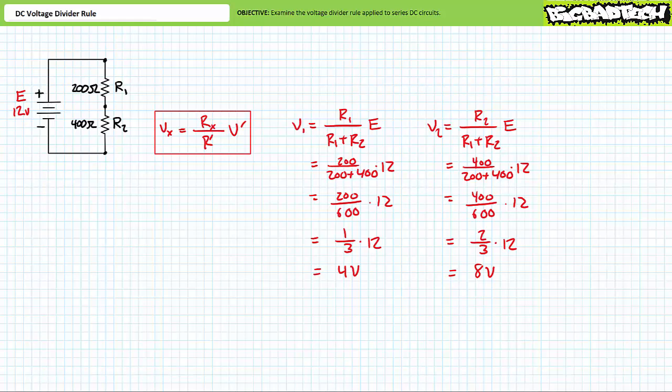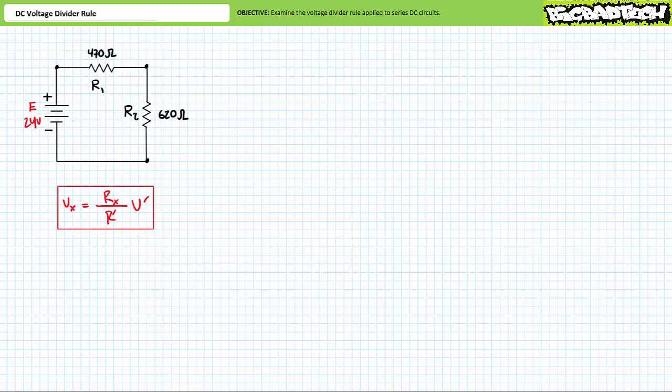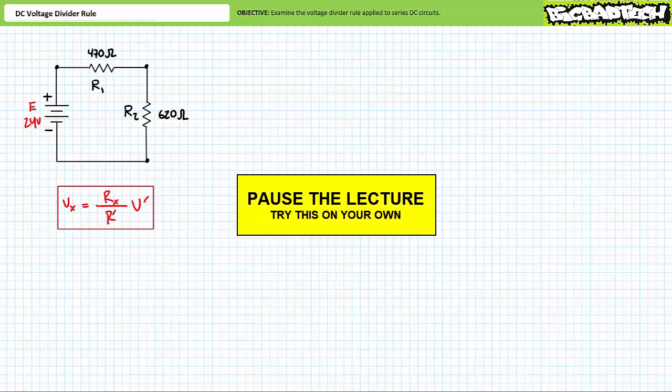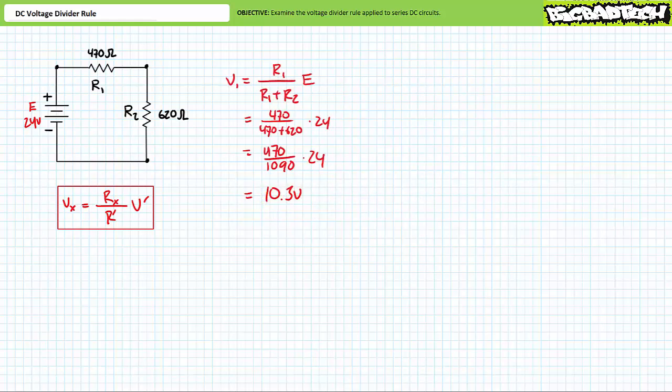Let's put the voltage divider rule to the test. Consider the series circuit of two elements — see if you can use the voltage divider rule to quickly and directly solve for voltage across each element in the system. The voltage divider rule set up to solve for V1 equals R1 divided by (R1 plus R2) times supply voltage E. Substituting in our given values quickly and directly yields V1 to be 10.3 volts.